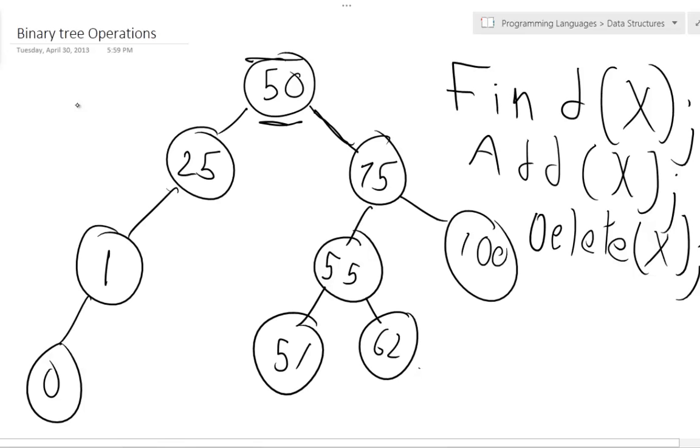Now, for add, add works pretty easily too. I need to find where I'm going to add it in the tree, and then just simply create a new node and add it and chain it with the tree. So let's say I want to add 2 to my tree. I again kind of do find, but once I find the node, find where I can add it, and then I add it.